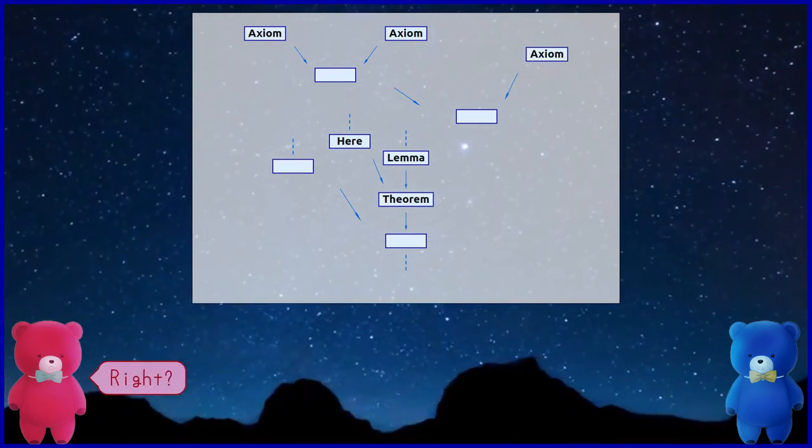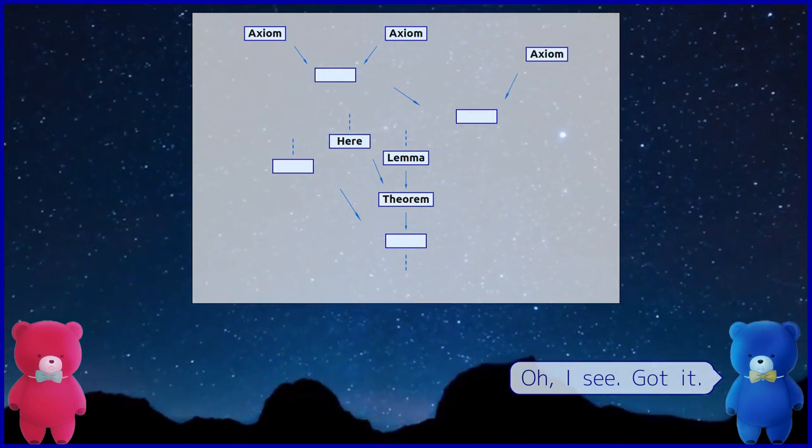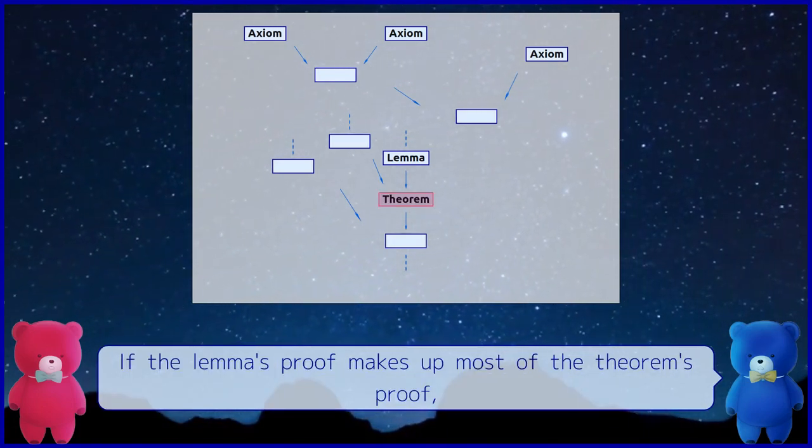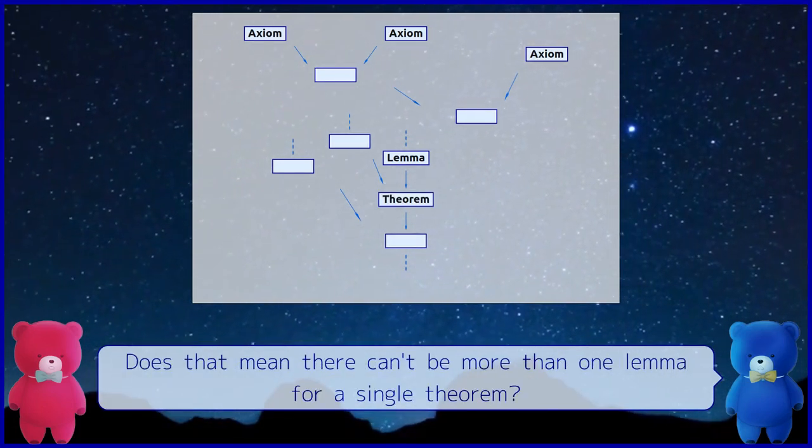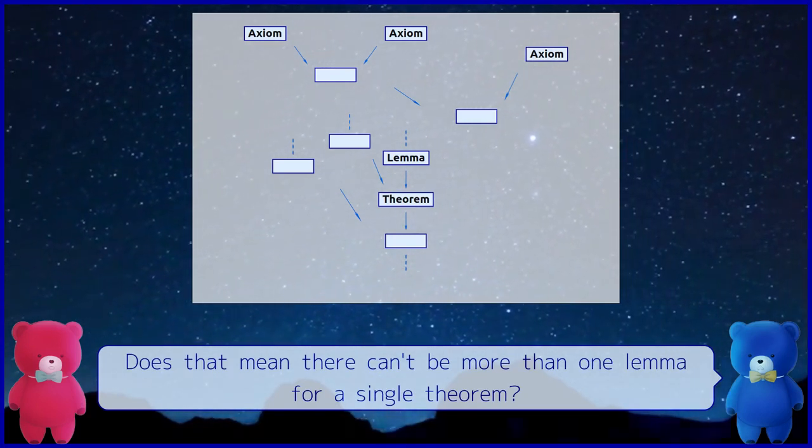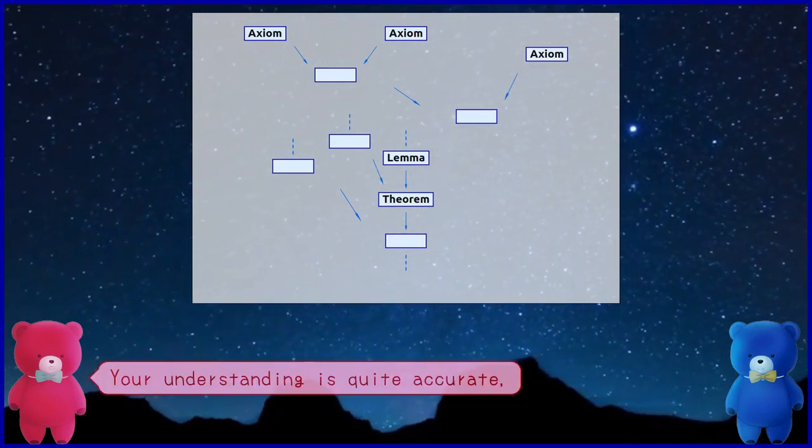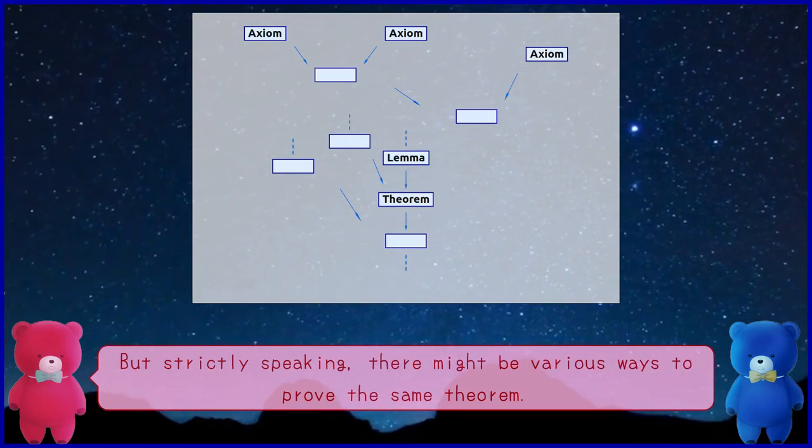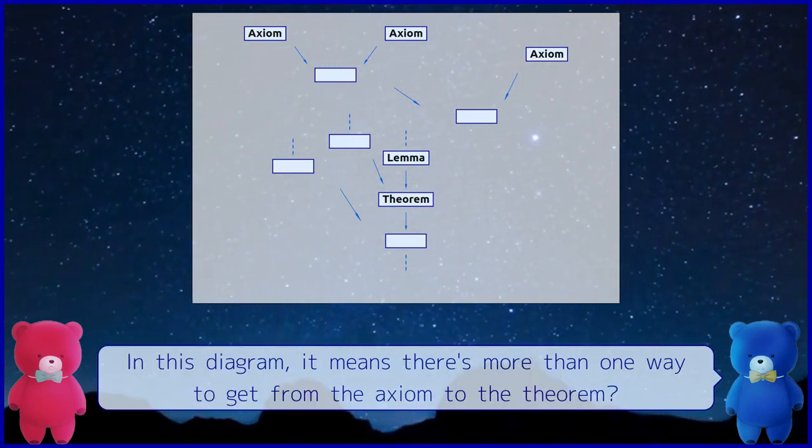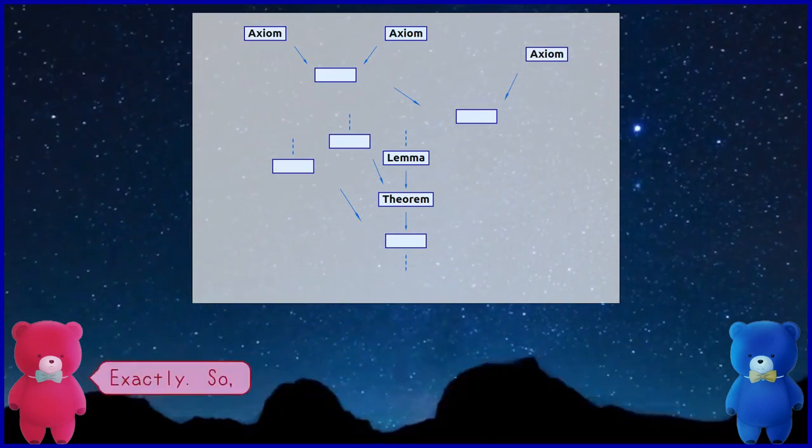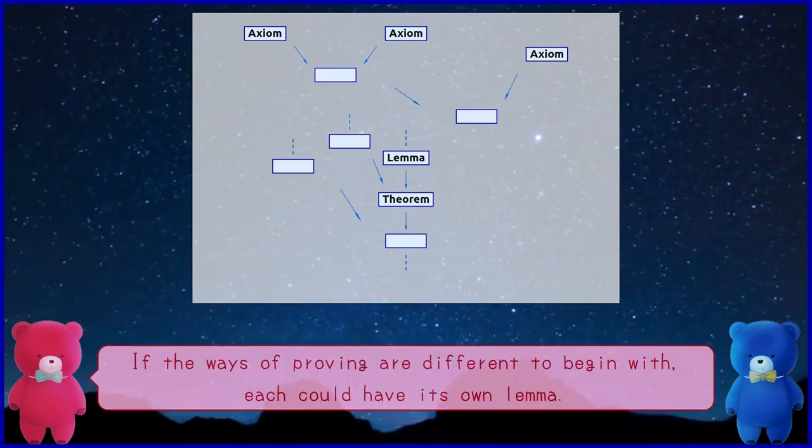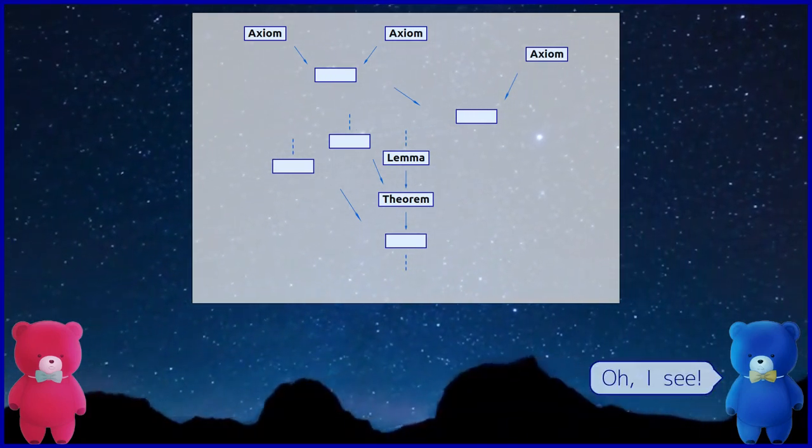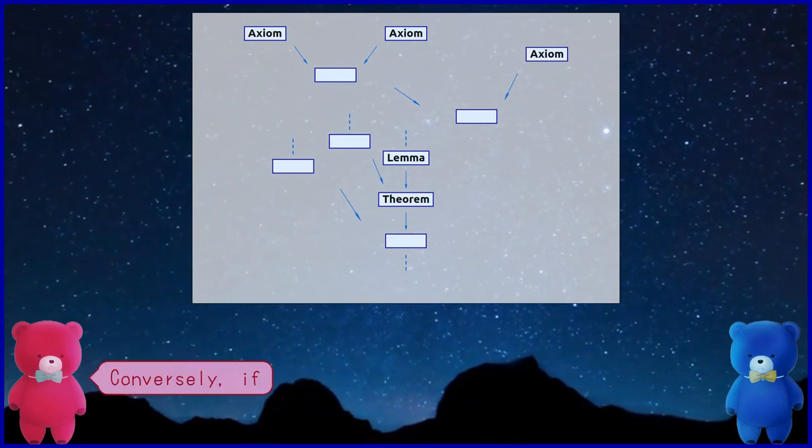All right, oh I see, got it. By the way, I just thought of this. If the lemma's proof makes up most of the theorem's proof, does that mean there can be more than one lemma for a single theorem? Your understanding is quite accurate, but strictly speaking, there might be various ways to prove the same theorem. In this diagram, it means there's more than one way to get from the axiom to the theorem. Exactly. So if the ways of proving are different to begin with, each could have its own lemma.